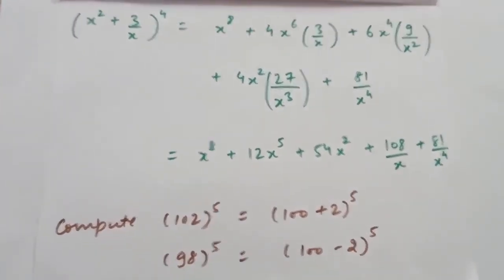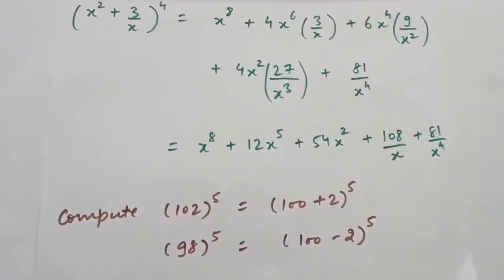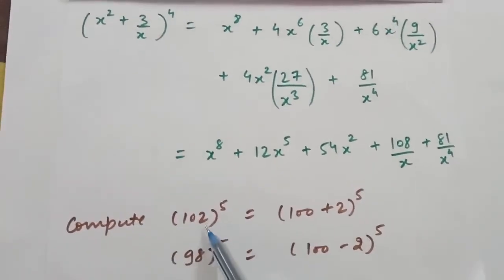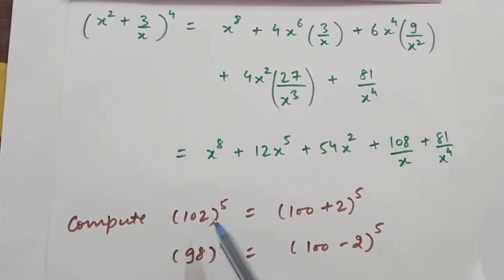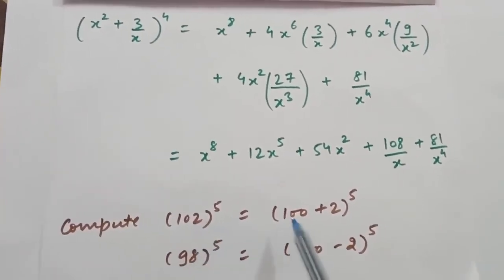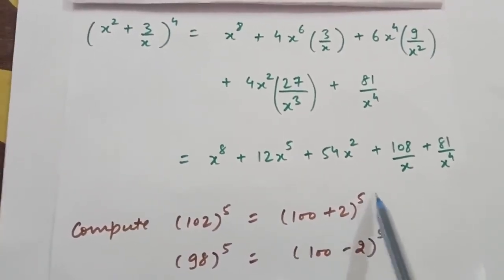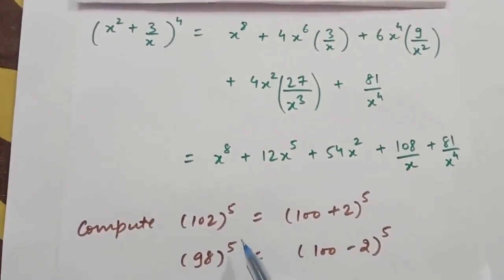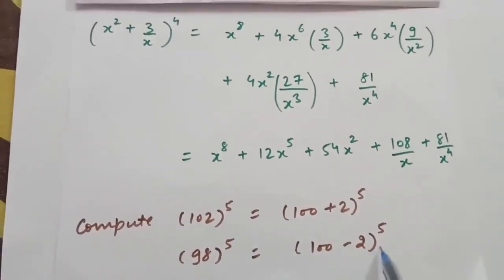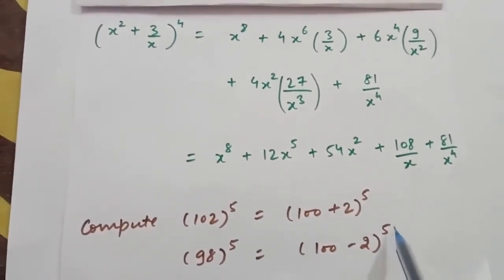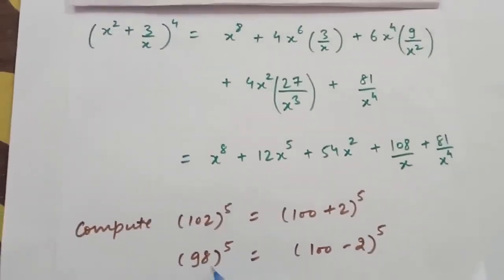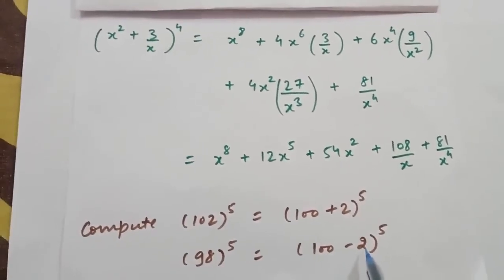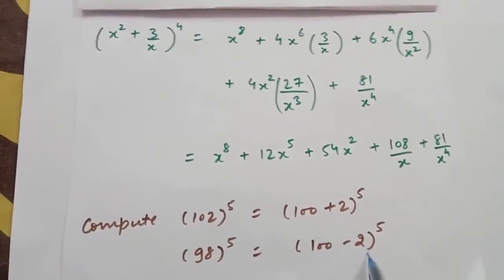By using binomial theorem like this, we can expand binomial expressions. For example, to compute 102^5, we write it as (100+2)^5 and apply binomial theorem. Similarly for 98^5, we write it as (100−2)^5 — not as (90+8) — because powers of 100 are easier to compute.